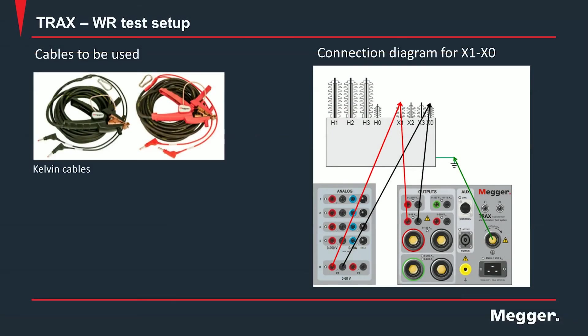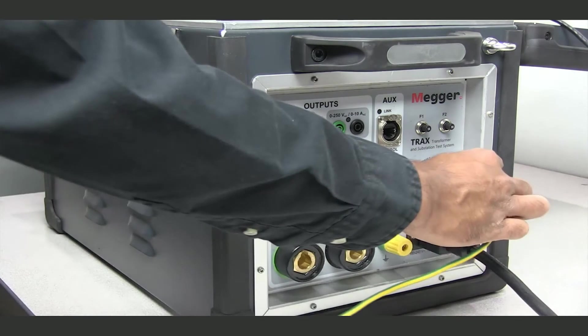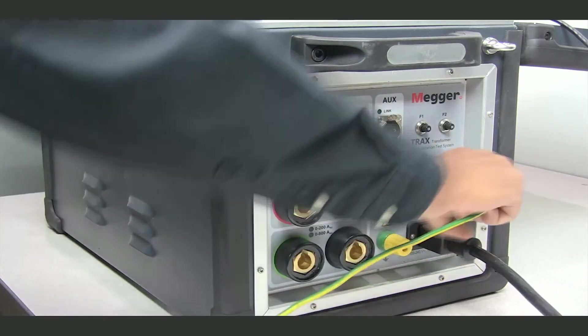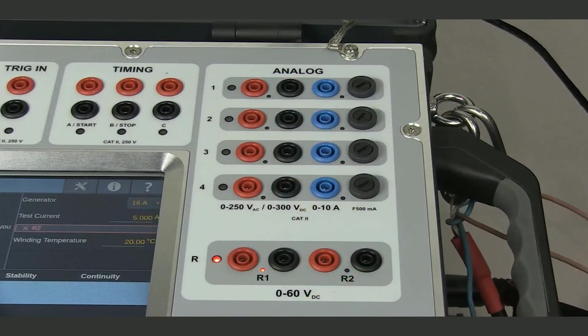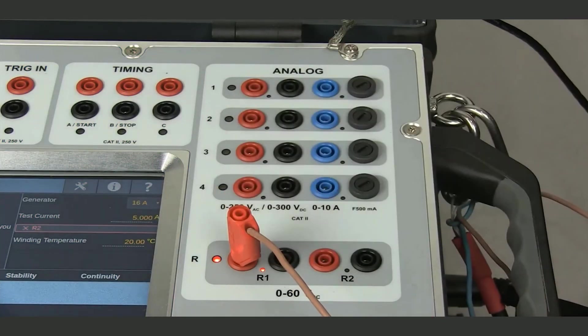To run a winding resistance test using the 16 amp DC source we would need a pair of kelvin cables. Let's start off the test by running measurements on the low voltage winding, beginning with the A phase. The first step is to connect the ground lead from the Trax main unit to the grounding pad on the tank of the transformer under test. When I select the winding resistance app, the LEDs for the appropriate input and output light up.